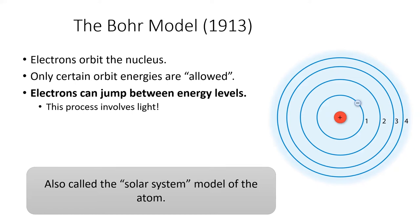Electrons can jump between the energy levels, a process which always involves the emission or absorption of light. We define the ground state of an atom as when the electrons are in their lowest possible energy levels. Electrons are happiest when they're in the ground state.